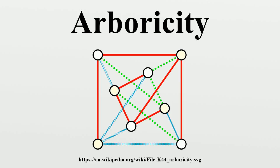Nash-Williams proved that these two facts can be combined to characterize arboricity. If we let n_S and m_S denote the number of vertices and edges, respectively, of any subgraph of the given graph, then the arboricity of the graph equals the maximum of ⌈m_S/(n_S−1)⌉ over all subgraphs. Any planar graph with n vertices has at most 3n−6 edges, from which it follows by Nash-Williams' formula that planar graphs have arboricity at most three.